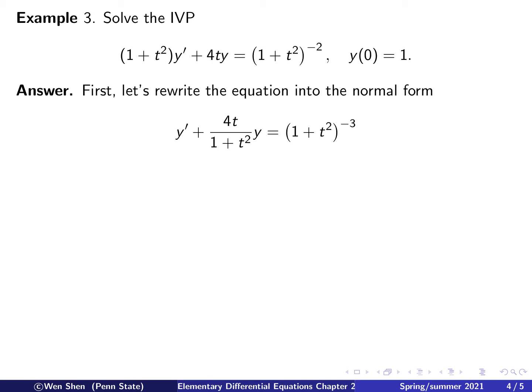The third example here looks a bit more complicated. We have a linear equation with variable coefficient functions. Here is our equation: (1 plus t squared) y prime plus 4ty equals (1 plus t squared) to the power negative 2. The initial condition is given, y at 0 equals 1.